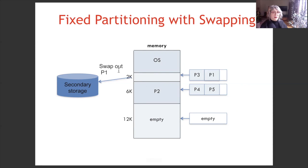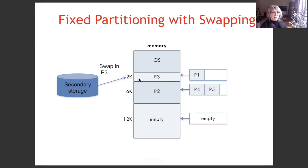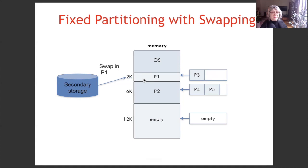When the time quantum expires for process P1, it is swept out from main memory to secondary storage and enters the end of the queue. The process at the front of the queue is selected to be loaded into main memory, and process P3 is swept in from secondary storage into main memory. Sometimes later, the time quantum for process P3 expires; it enters the end of the queue and is swept out from main memory to secondary storage, and P1 is swept back in from secondary storage.